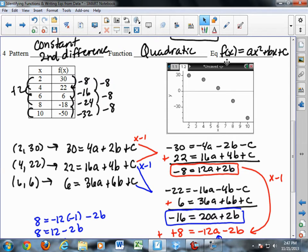So 30 equals 4a. Now, where did I get the 4a? Well, x squared would be 2 squared, so that would be 4a. b times x, b times 2, would be 2b plus c. Notice there's nothing squared down here because the squared part is a number that I'm inserting.